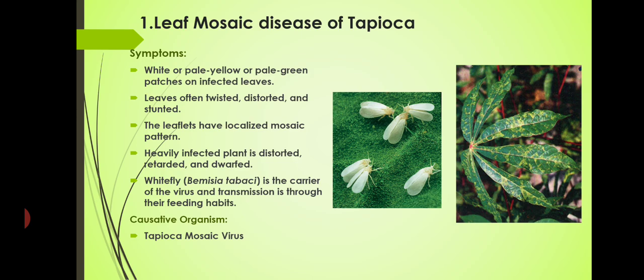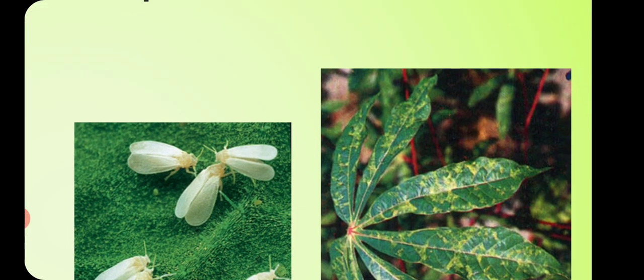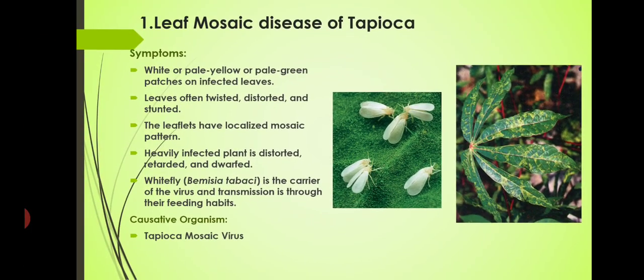We will discuss about the symptoms — that is how we can identify the presence of disease. When observing the tapioca plant, that is Manihot esculentus, we can see pale yellow or pale green patches which are appearing as a mosaic pattern on the leaves. This is one of the important identification symptoms of this particular disease. The leaves then become twisted and distorted.